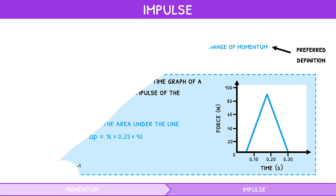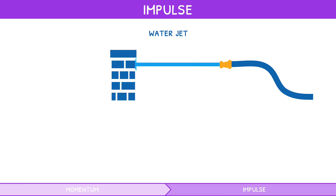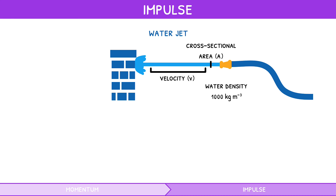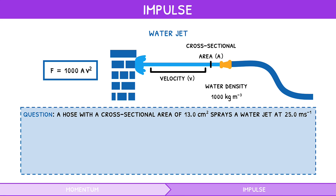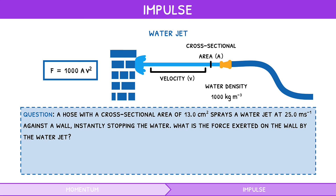A special scenario of calculating force occurs when a water jet hits an object such as a wall. Problems typically give the water jet's cross-sectional area, water density (1,000 kg/m³), and water velocity to calculate the exerted force. The formula for the water's momentum is 1,000 times cross-sectional area times velocity squared, which also equals the exerted force. For example, a hose with a cross-sectional area of 13 cm² spraying at 25 m/s against a wall instantly stopping the water exerts a force of 813 newtons.